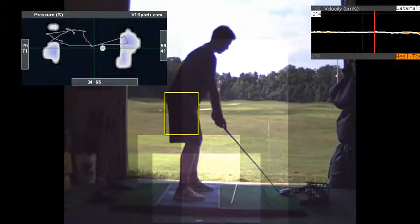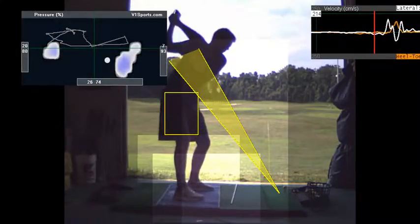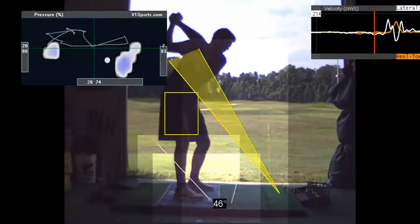Again, you want to practice that away from the golf course, away from the range, just getting that 45-degree angle drill where you put a club across your right toe and left heel right there.